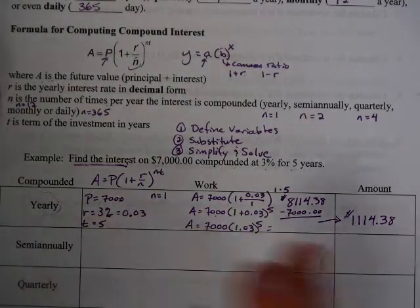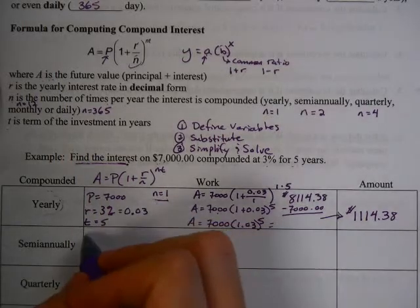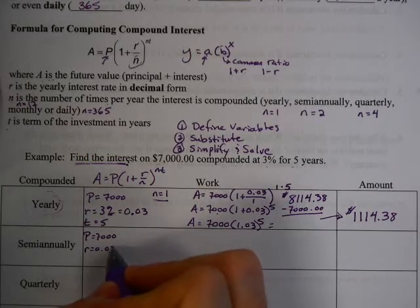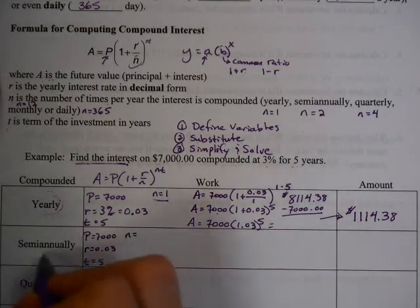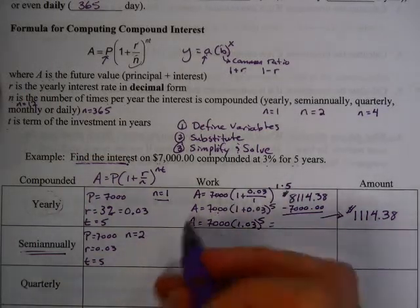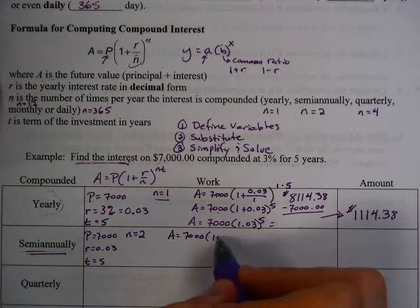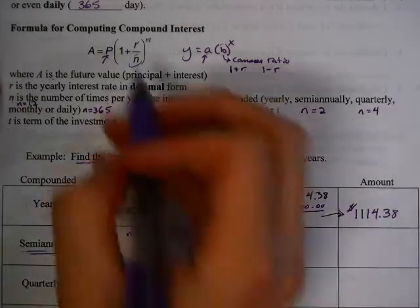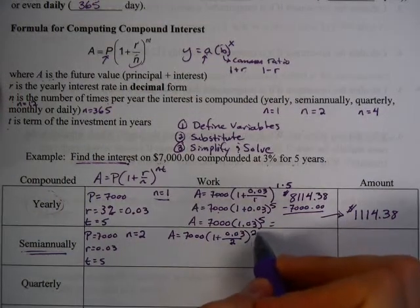But I also did it for all of these. So I might be mixing up the cents. But it's 1,114. Now, the next problem is done exactly the same. All these variables are exactly the same except n. So your principal is 7,000. Your rate is the same, 3 hundredths. Time is still 5. But n, because it's done semi-annually, n is 2.